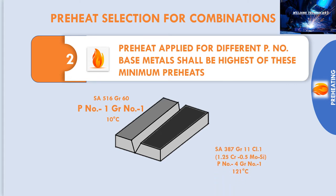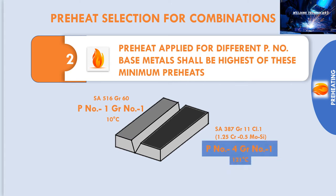Part 2 is P No. 4, Group No. 1, S387, Grade 11, Class 1 — 1 quarter chrome moly silicon — and it has a minimum preheat of 121 degree Celsius. How to select the preheat temperature for this combination of different P No.? P No. 4 has a higher preheat than P No. 1, so the preheat temperature shall be 121 degree Celsius as per the higher P No. 4, Group No. 1.